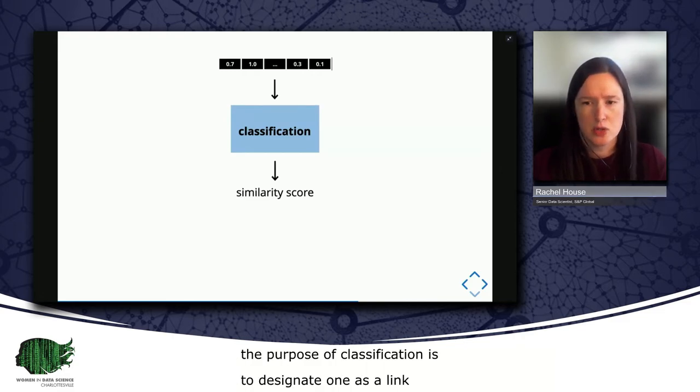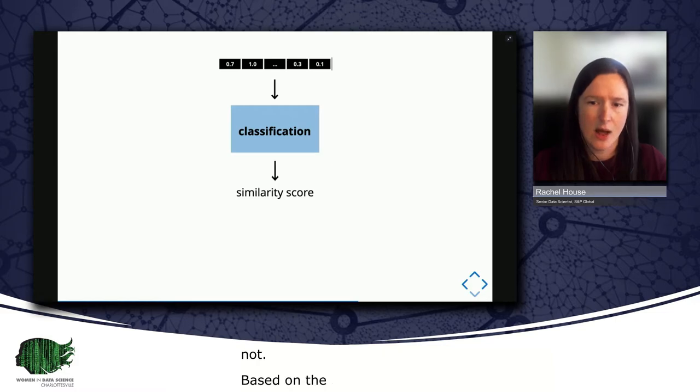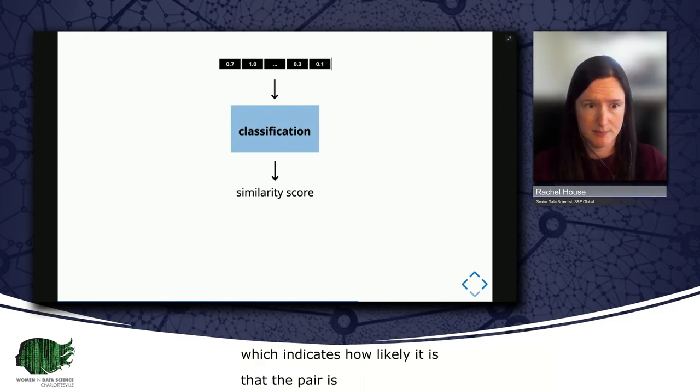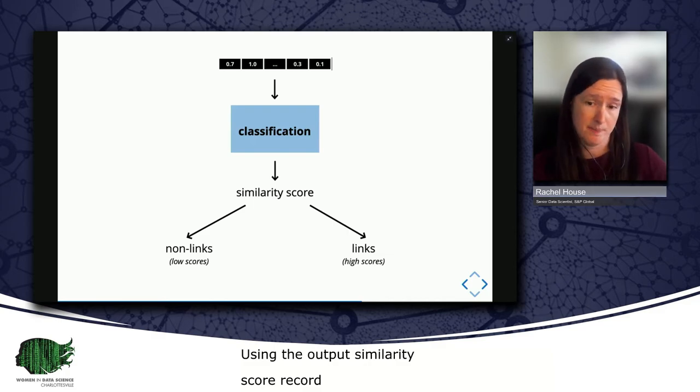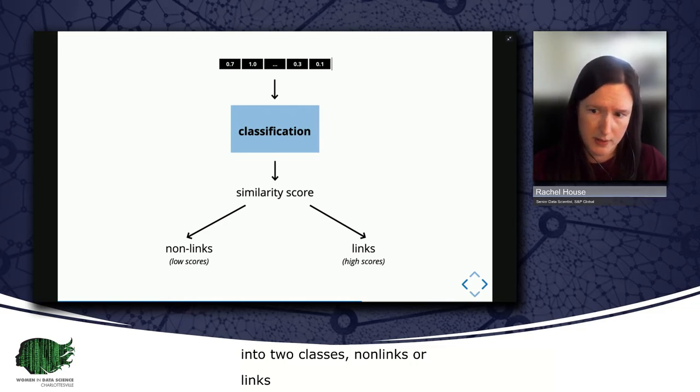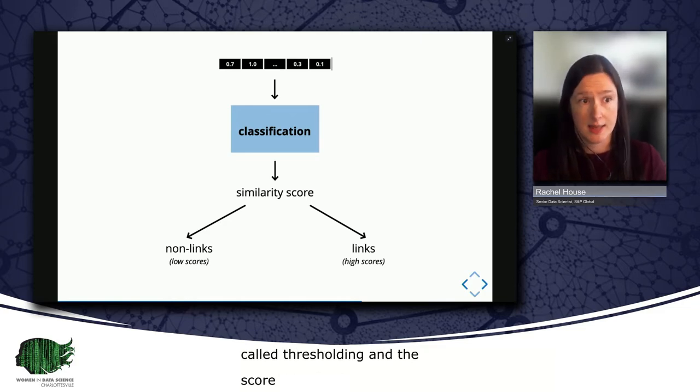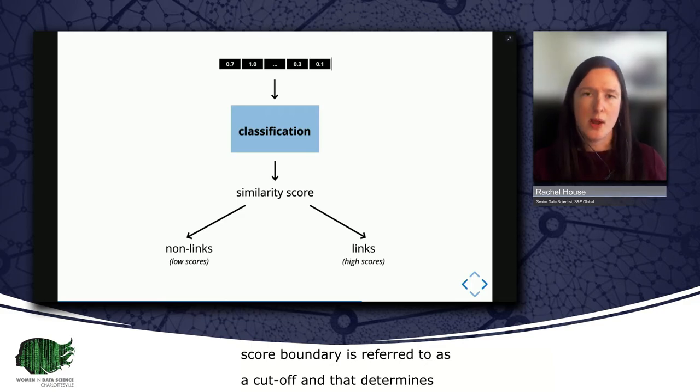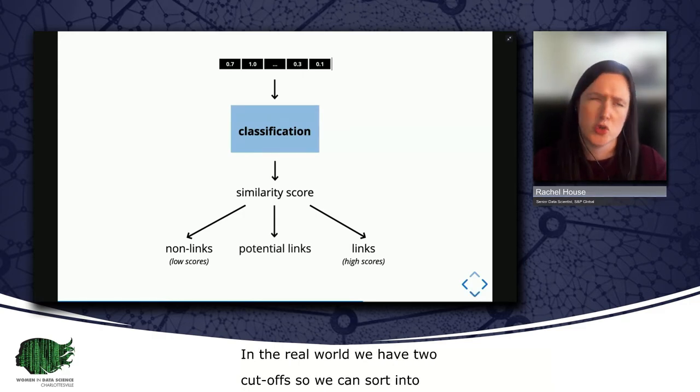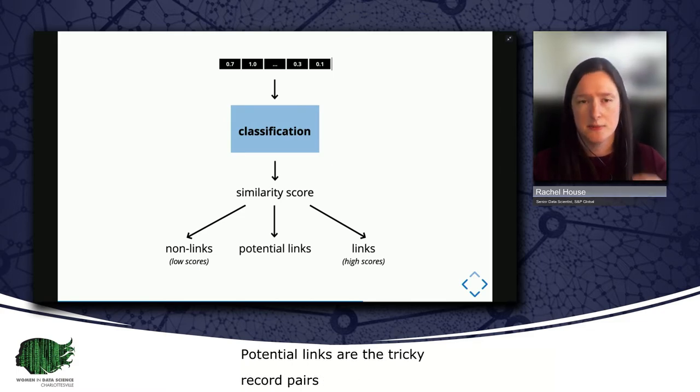The purpose of classification is to designate a given record pair as a link or not a link, based on its comparison vector. The classification approach will yield a single similarity score, which indicates how likely it is that the pair is a link. And using the output similarity score, record pairs can then be sorted into two classes, non-links or links, based on the score boundary. And this is commonly called thresholding. And the score boundary is referred to as a cutoff. The cutoff determines which record pairs get classified in which bucket. In the real world, we often have two cutoffs, so that we can sort into three classes: non-links, links, and potential links. Potential links are those tricky record pairs that need to be routed to a subject matter expert for clerical review to get a definitive classification.